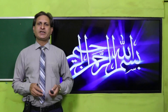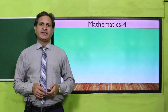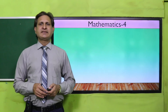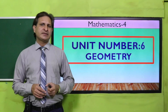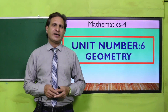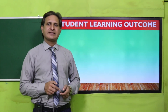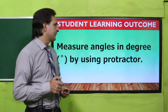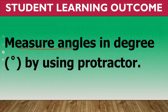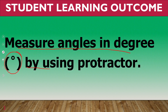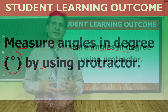Bismillahirrahmanirrahim. Respected teachers and dear students, Assalamualaikum. I am Waqas Ahmad. Today we will discuss Mathematics Grade 4, Unit number 6 about Geometry, Lesson number 4. In this lesson we will discuss the SLO: Measures angles in degrees. This degree ki symbol hai. By using protractor — protractor ek geometrical tool hai.